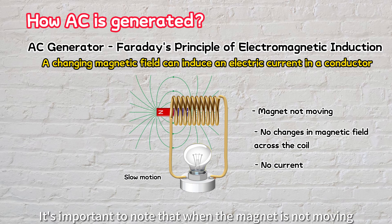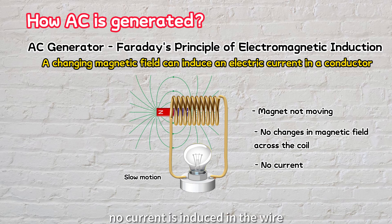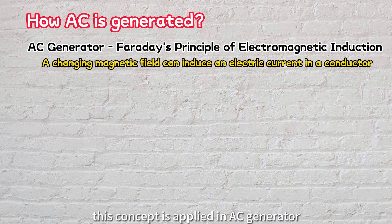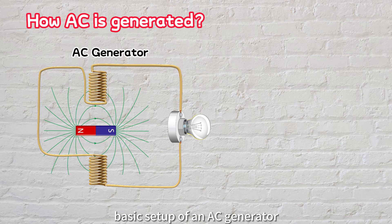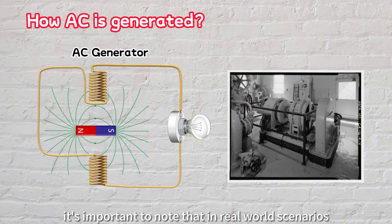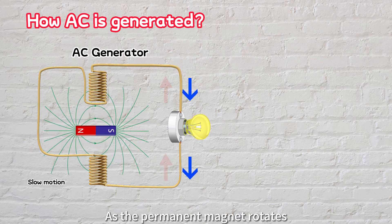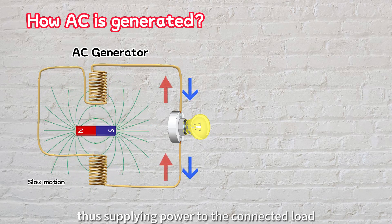Now let's look at how this concept is applied in an AC generator. To make it easier to understand, we'll consider a simplified basic setup of an AC generator that includes a permanent magnet and wire coils connected to a load. However, it's important to note that in real-world scenarios, AC generators are much more complex and involve additional components. As the permanent magnet rotates, the changing magnetic field will create an electric current in the wire, thus supplying power to the connected load.